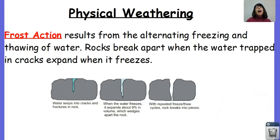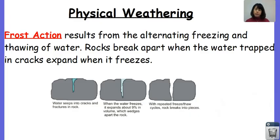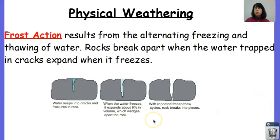We're going to focus on the different types of physical weathering first. The most dominant type of physical weathering in New York State is frost action. Frost action results from the alternating of freezing and thawing of water. When this freezing-thawing cycle happens, rocks will break apart more easily because water in the cracks freezes and expands, thereby making the crack bigger. Anyone who's put a can of soda in the freezer has experienced this — the can explodes. The same thing can happen with a rock: the water seeps in, expands, makes the crack bigger, and splits the rock in two.